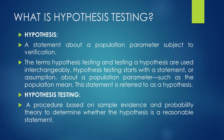Hypothesis testing starts with a statement or assumption about a population parameter such as the population mean. The statement is referred to as a hypothesis. Since we cannot take the whole population because it is very vast, we use a procedure or create an assumption about the population and take a decision — we accept it or reject it — based on sample data.